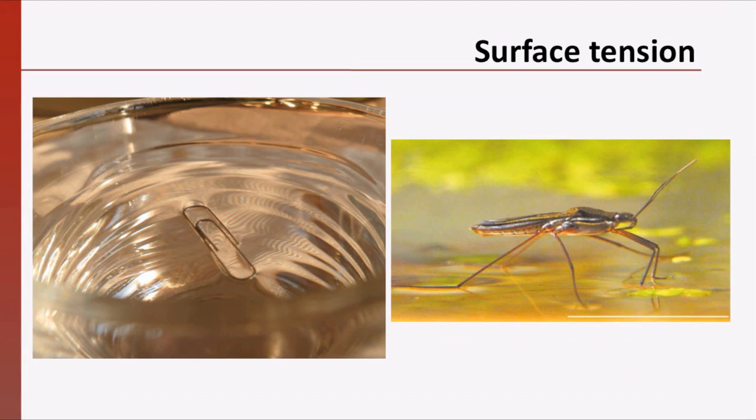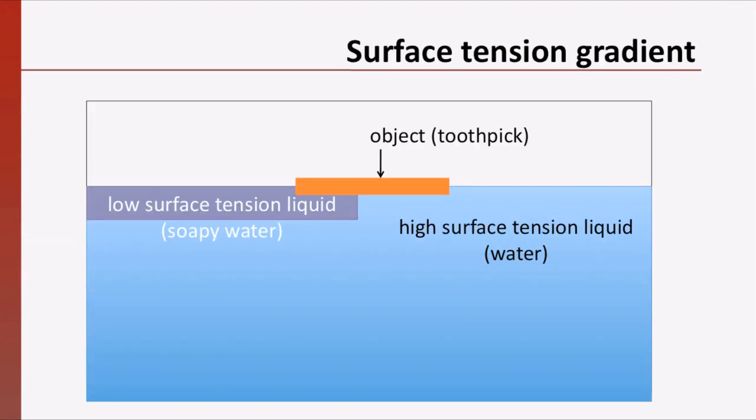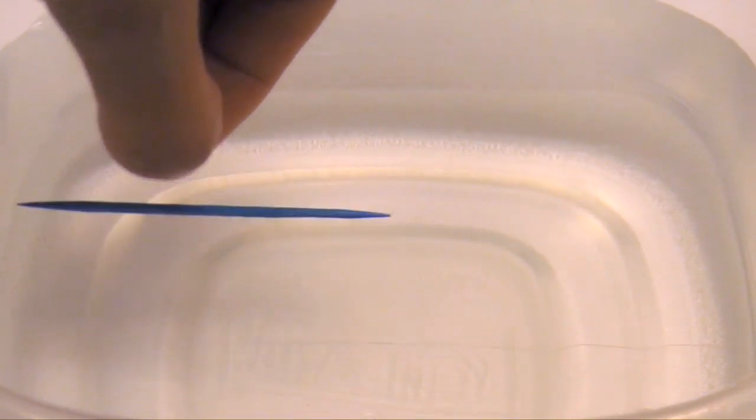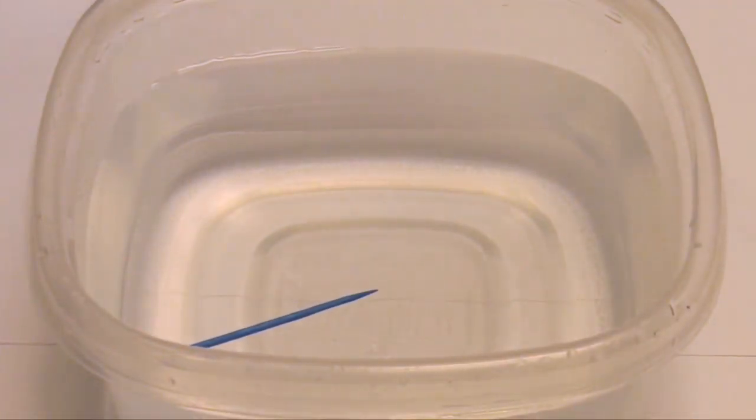The high surface tension of water allows objects denser than water, such as a paper clip or a water strider, to float on the surface. If an object has a high surface tension liquid on one side of it and a low surface tension liquid on the other side, the difference in surface tension will cause the object to move toward the high surface tension liquid. We can see that happen in this demonstration of a toothpick floating on water. If we add a few drops of soapy water to one side of the toothpick, the toothpick moves away.